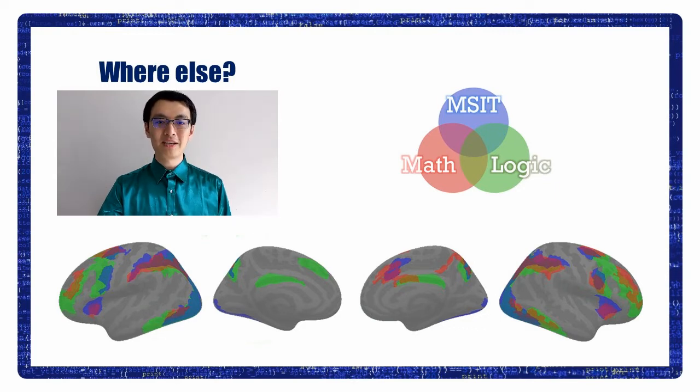Both logic and executive control highly activated the occipital lobe. This overlap is unexpected. Future study is required to find out the cause for the overlap beyond the frontal parietal network.